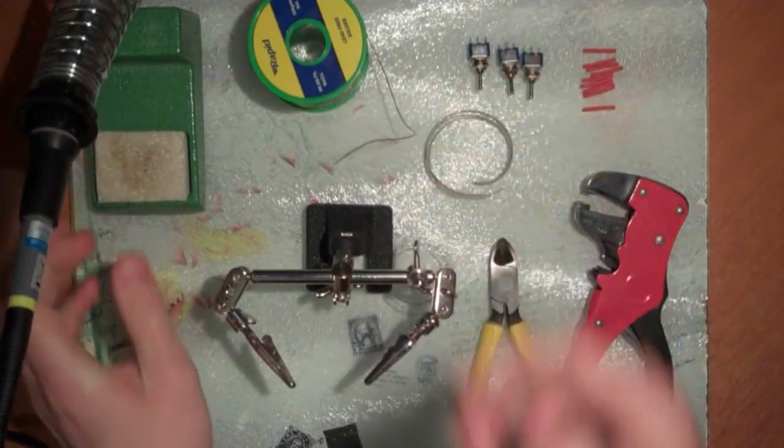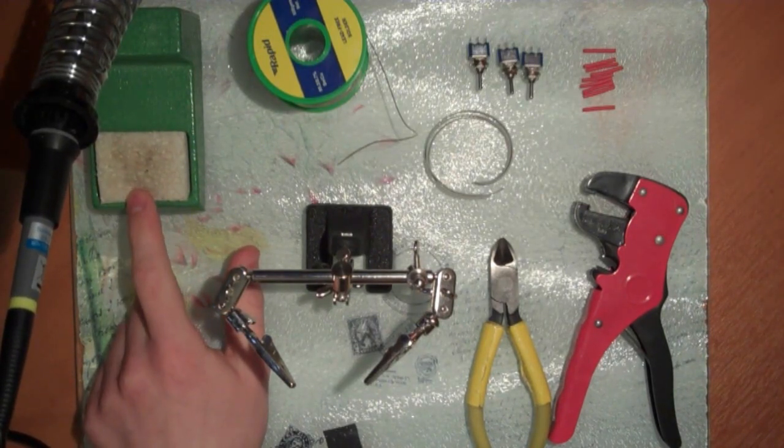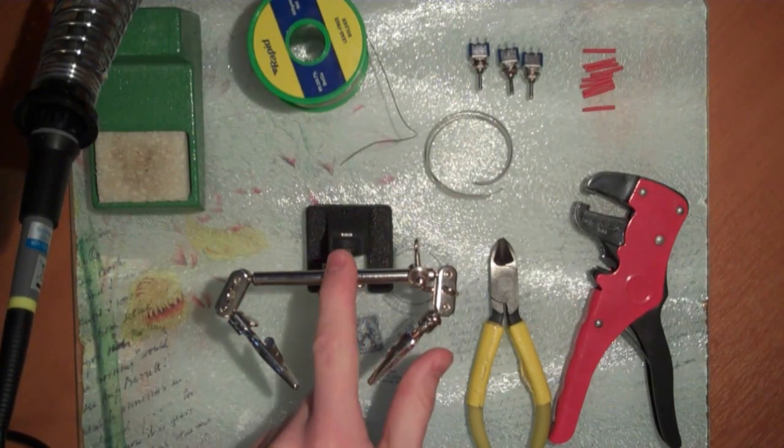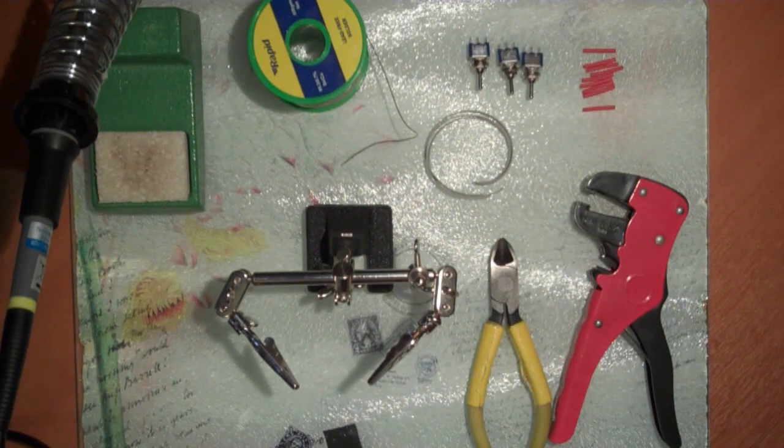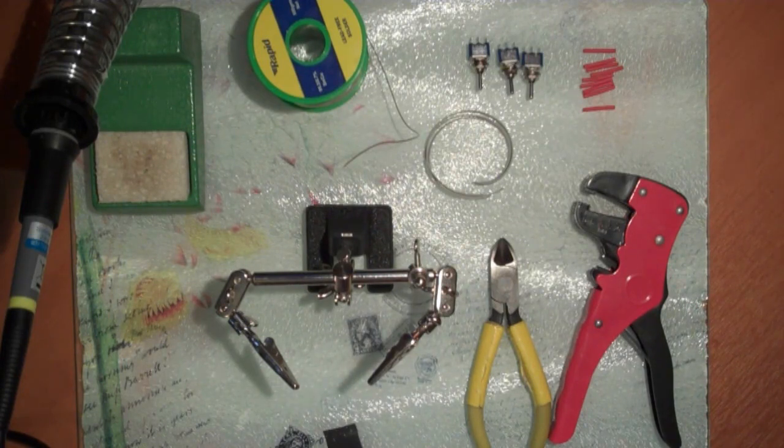A soldering stand of course. A sponge so that you can clean your tip regularly on the iron. A set of helping hands which will help you to hold the switch, because it does get very hot when soldering them and you wouldn't want to be holding them in your hands. It can be quite difficult to hold them with a pair of pliers while soldering.